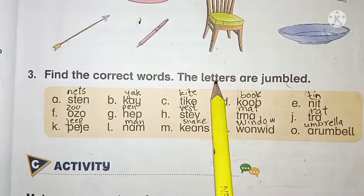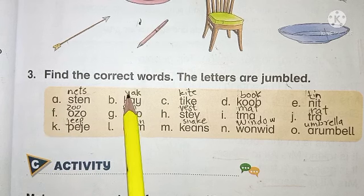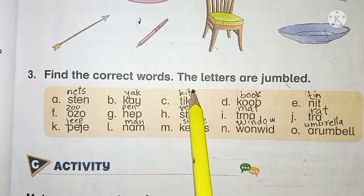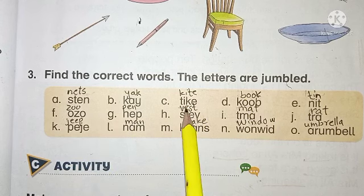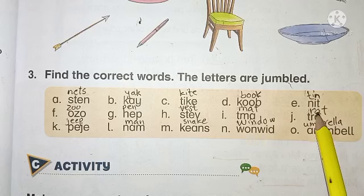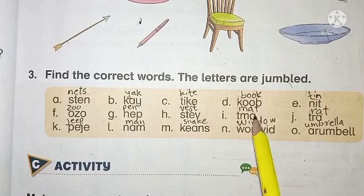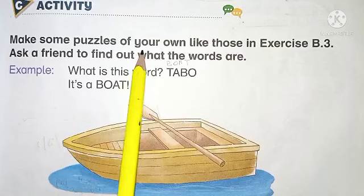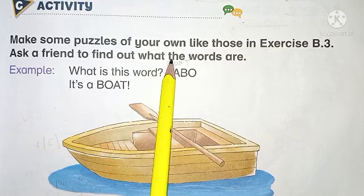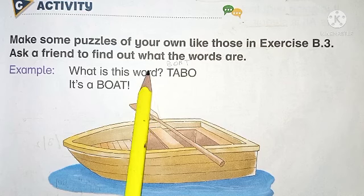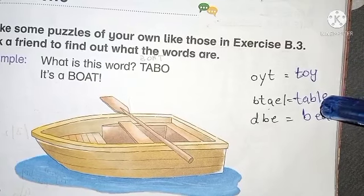Find the correct words — the letters are jumbled. The first one is: nets. In exercise B3, ask a friend to find out what the words are. What is this word? T-A-B-O — it's a boat. We can also make pictures for these words.